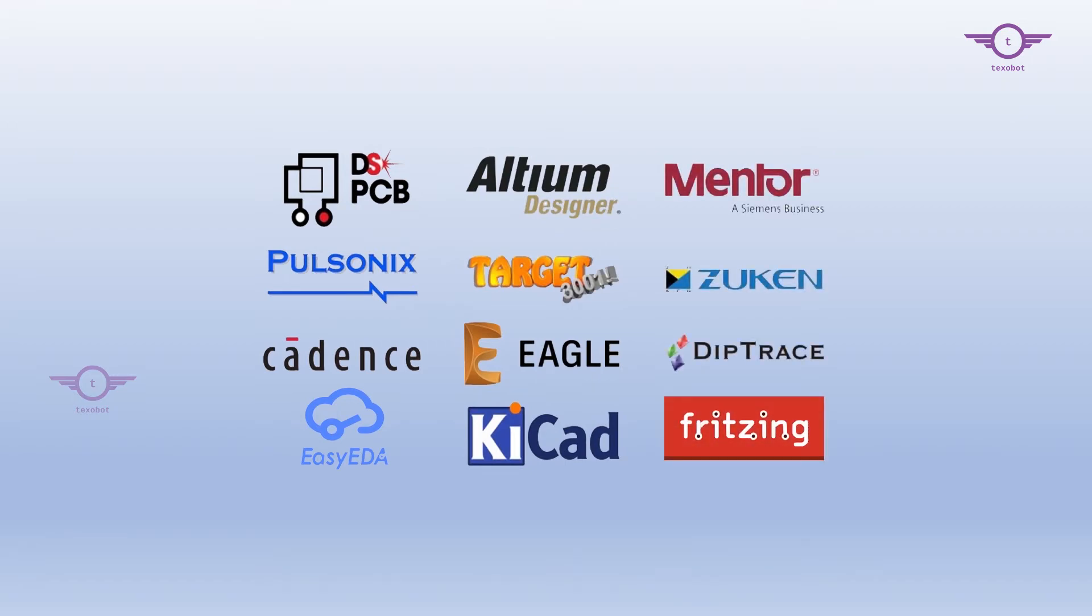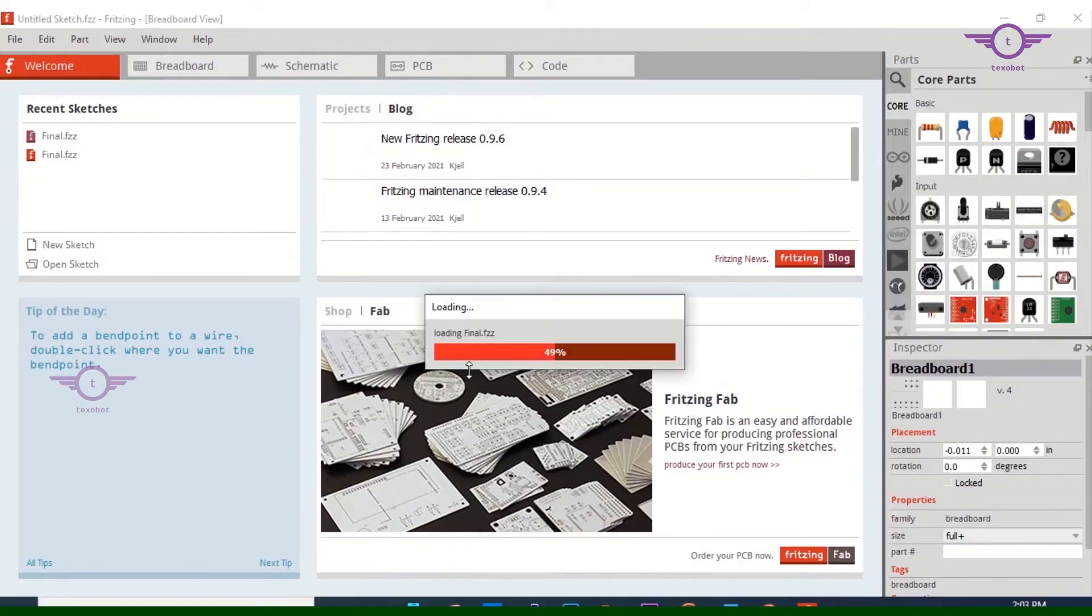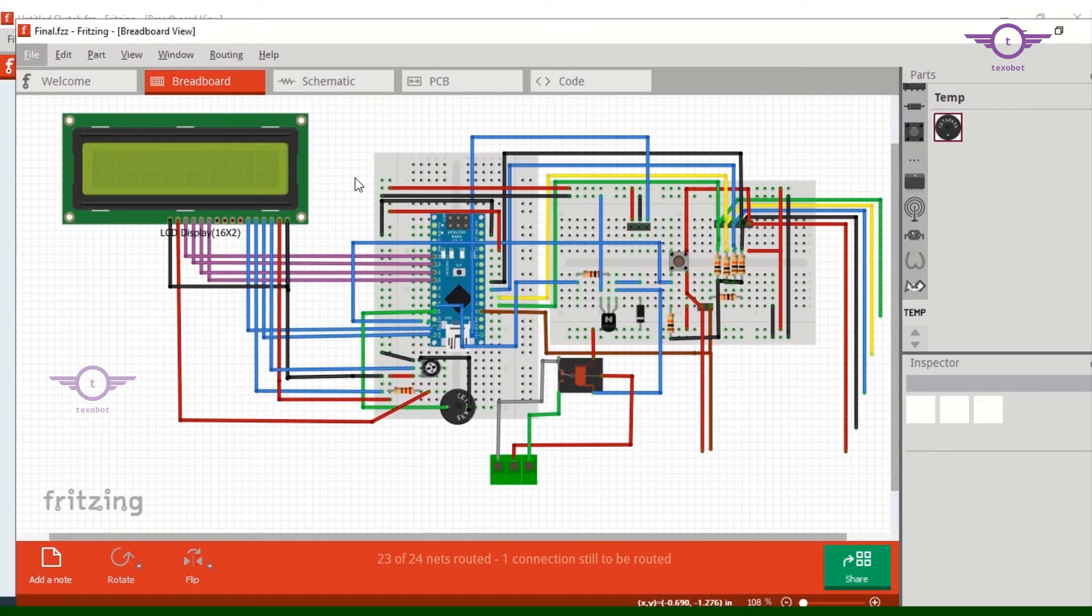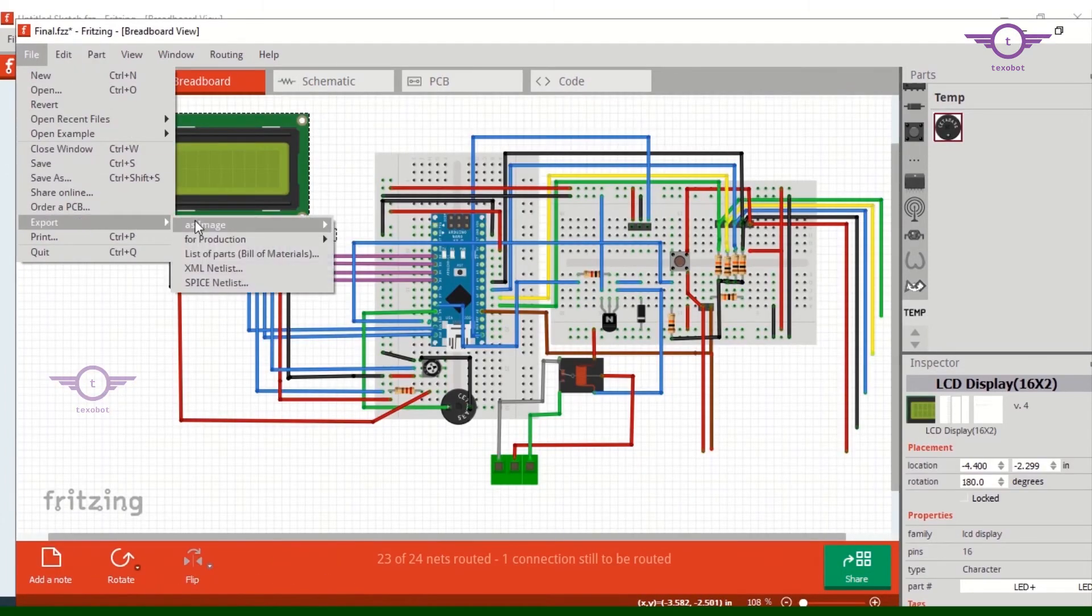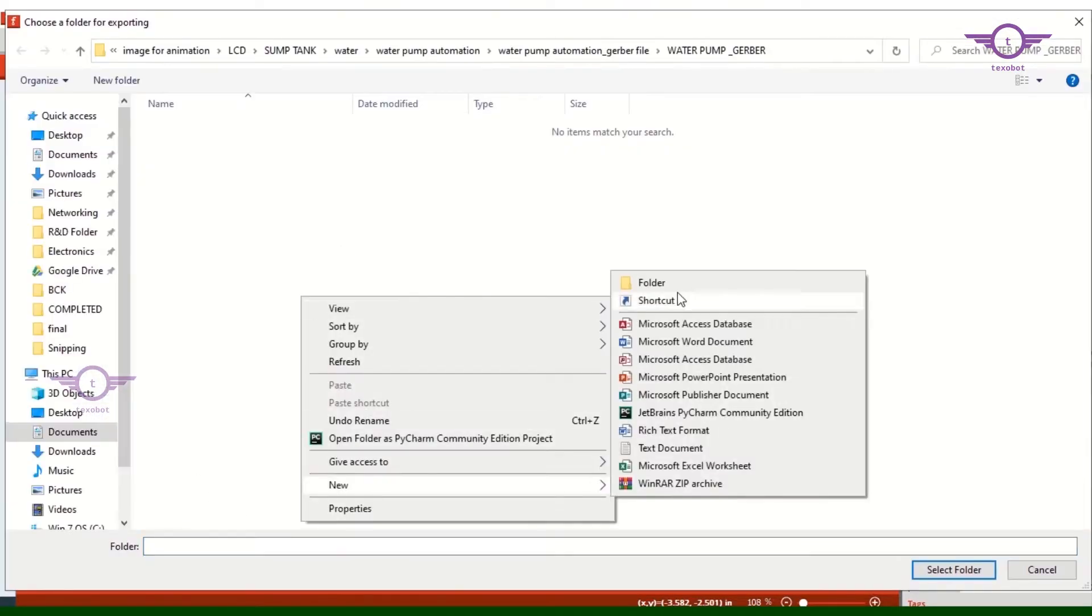Now let's have a look into the PCB designing process. You can choose online or offline platform for designing your PCBs. Here we used Fritzing software to design the PCB. Once we finish the design, we will generate the Gerber file needed for manufacturing the PCB.